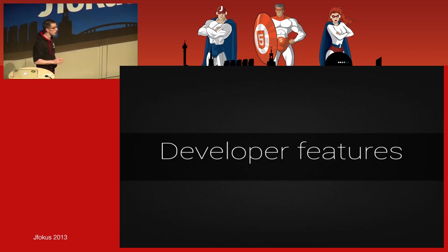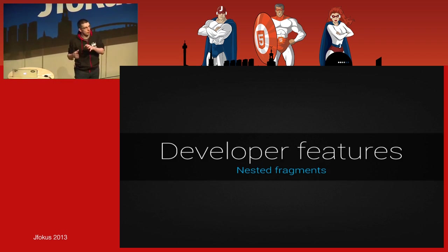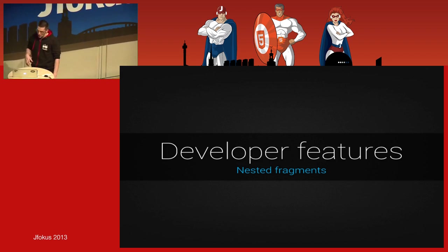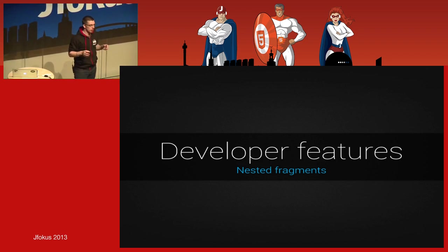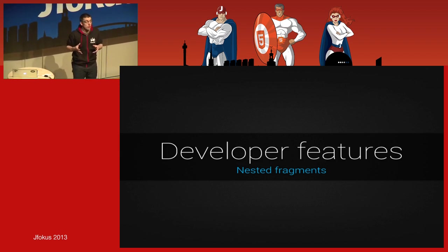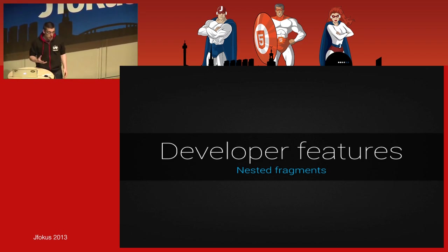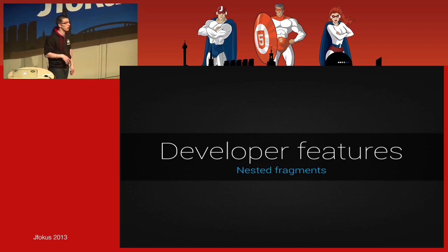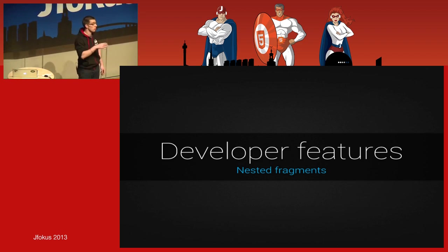Regarding developer features, a new interesting addition is nested fragments — you can now have fragments within fragments, like the Inception movie. This is particularly necessary when using a ViewPager, where each page is a fragment. If you want to insert a ViewPager inside a fragment, that was not possible prior to 4.2. This has been backported with the Android Support Library all the way back to API 4, which is Android 1.6.